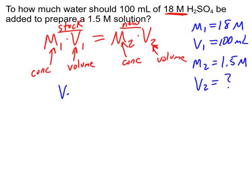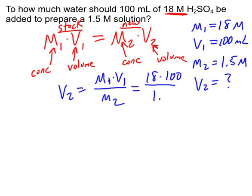So algebraically, V2 is going to equal M1 times V1 over M2. And if we plug all these numbers in, 18 times 100 over 1.5, and so if I calculate that out, I'm going to need my new solution will have a volume of 1,200 milliliters.